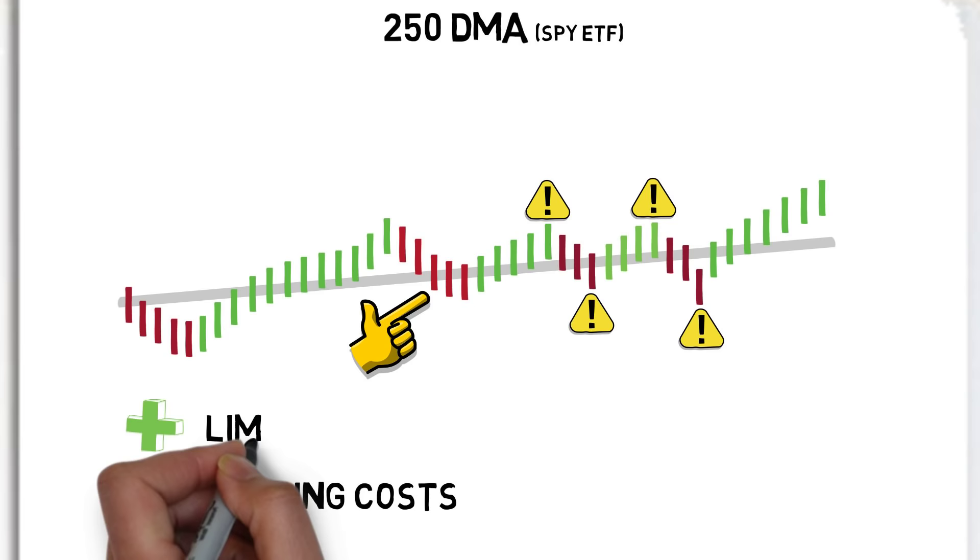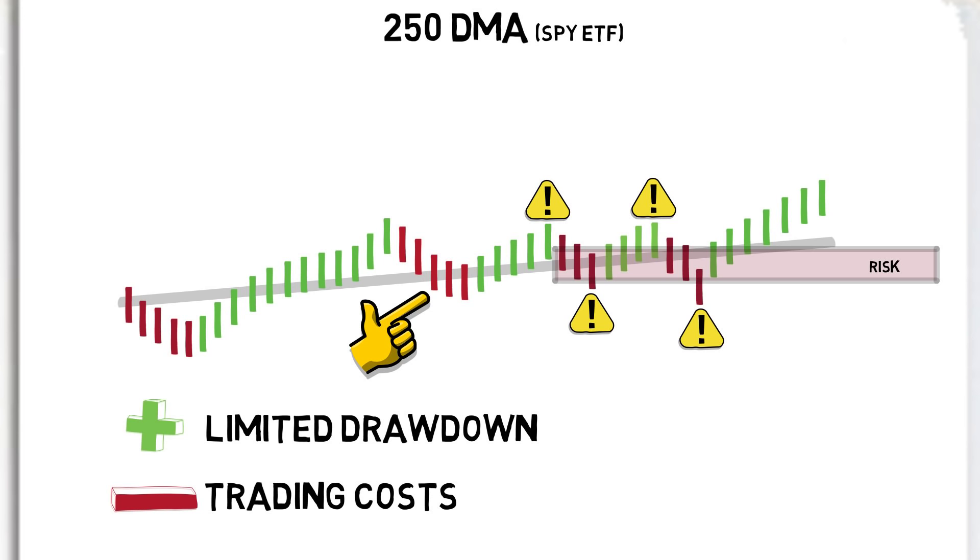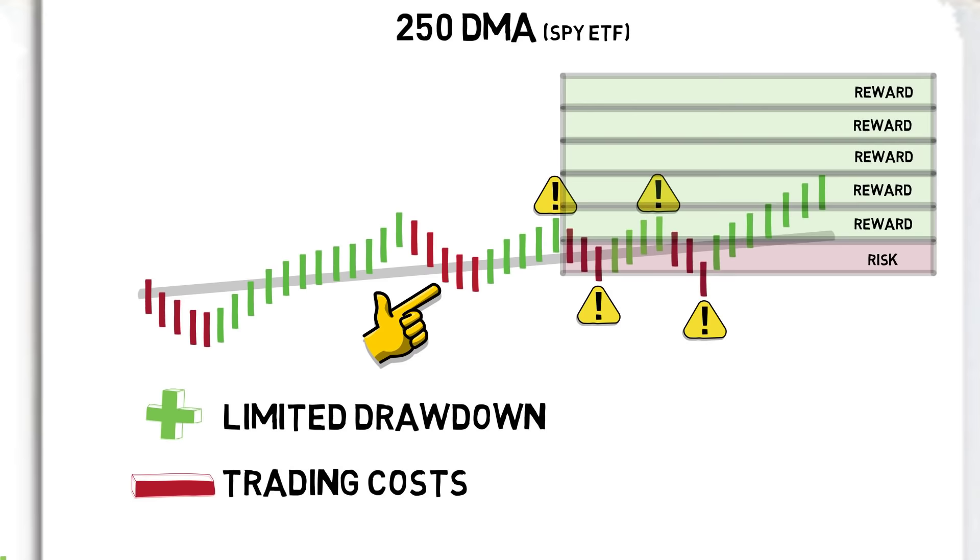Ultimately, using a moving average we can skew the asymmetric risk versus reward into our favour, by minimising risk and allowing for multiple reward, arguably the most important metric in any form of trading or investing.